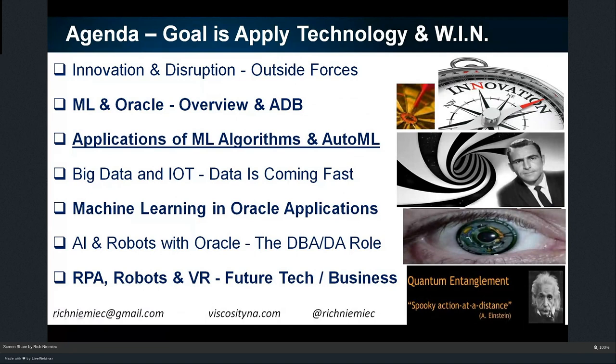We'll also look at how Oracle has gone one step further with auto machine learning — essentially using machine learning to help you, the developer or DBA, become even better with data, algorithms, and results that help your business. We'll also cover sources of data — big data and IoT data is coming faster and getting bigger — and machine learning that Oracle has built into their applications. We'll look at the future with robotics. The real key here is not to learn everything in detail, but to download this later and really write down which algorithms apply to your business.